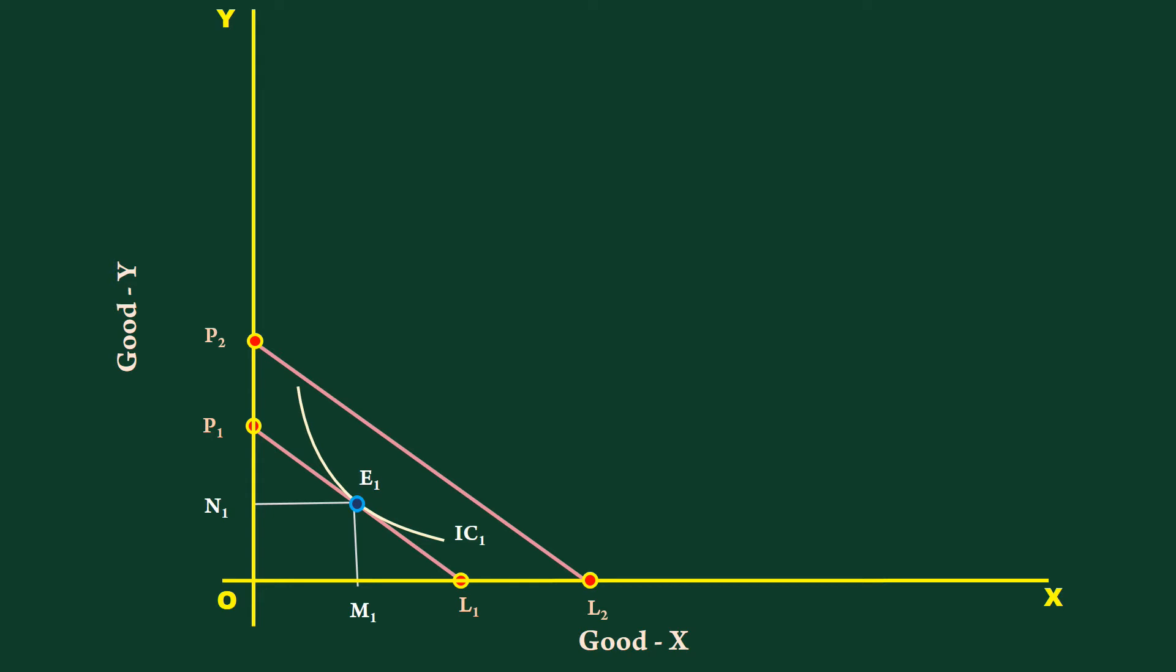It is parallel to the price line P1L1. It signifies there is no change in the prices of two goods. The relative prices is also the same. That is, the slopes of the two price lines are equal.